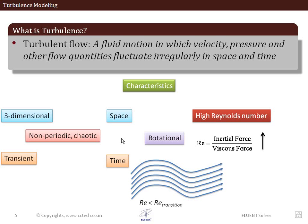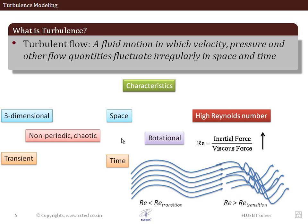Once the Reynolds number exceeds that specific value, the layers start mixing together. This mixing can occur due to changes in geometry, or simply because the inertial forces are too high, causing the layers to mix — and that is when we can say that turbulence has set in to the problem.